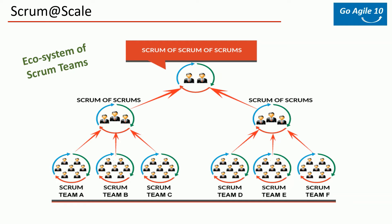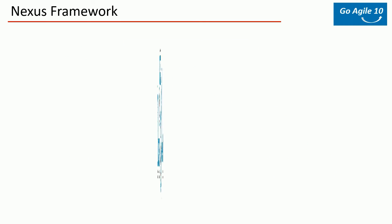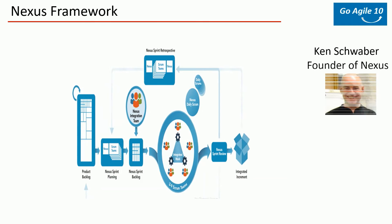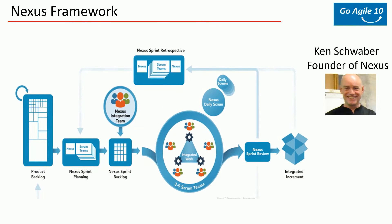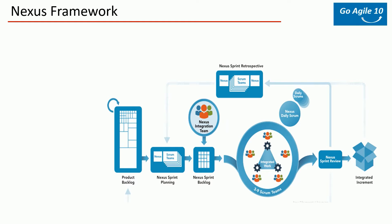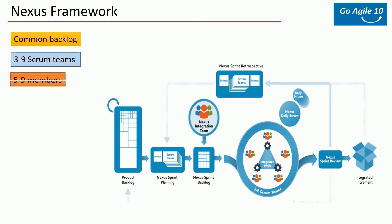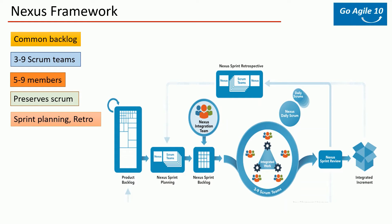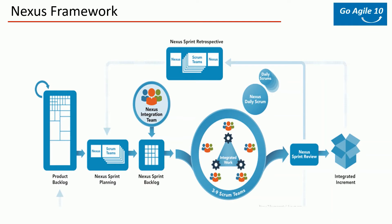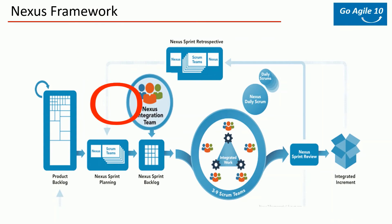Nexus is an agile framework used for scaling agile projects at a moderate size — say three to nine scrum teams, each made up of five to nine members. There is one common product backlog used by all teams. They have sprint planning and sprint backlogs, and additionally introduced a new term: the Integration Team, which typically consists of a product owner, scrum master, and one or more members from each team.